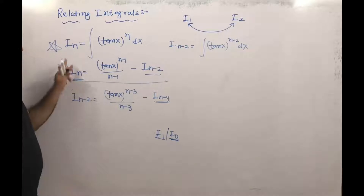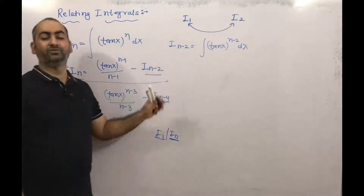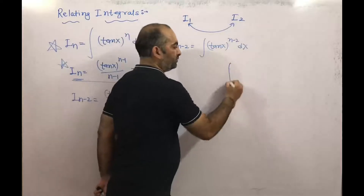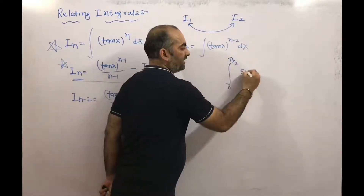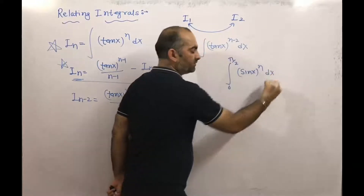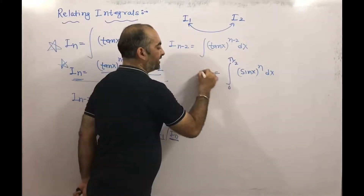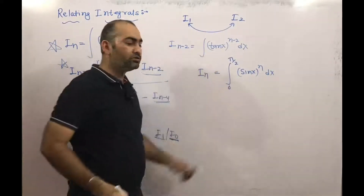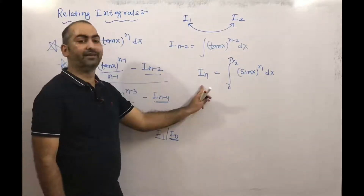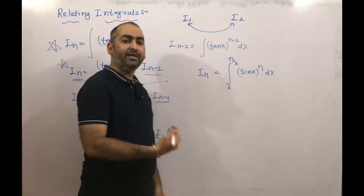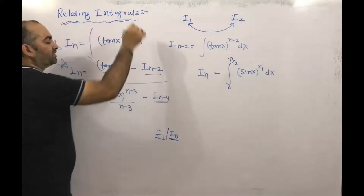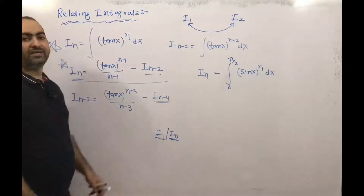We are finding the relation between In and I(n-2). In the Wallis formula also, we discussed the integration of sin(x)^n dx from 0 to π/2. We assume this as In, find the relation, and by using that relation, we evaluate In. So many integrals can be handled using relating integrals.